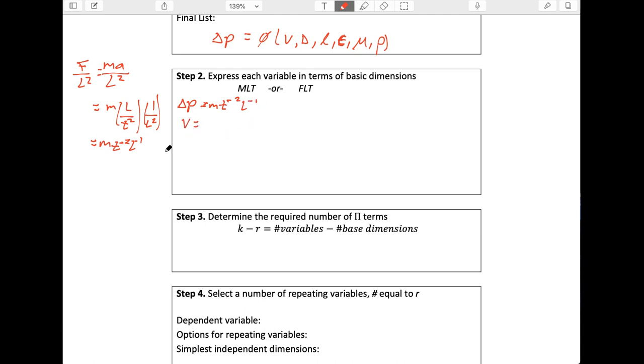Velocity. Well, that looks like distance per time. L, T to the minus one. Diameter is a length. The length, well, that's a length. The roughness is also some length, the measure of the size of the bumps. Viscosity can be written as mass per length per time. And finally, density is mass per volume. So we've got mass L to the minus three.